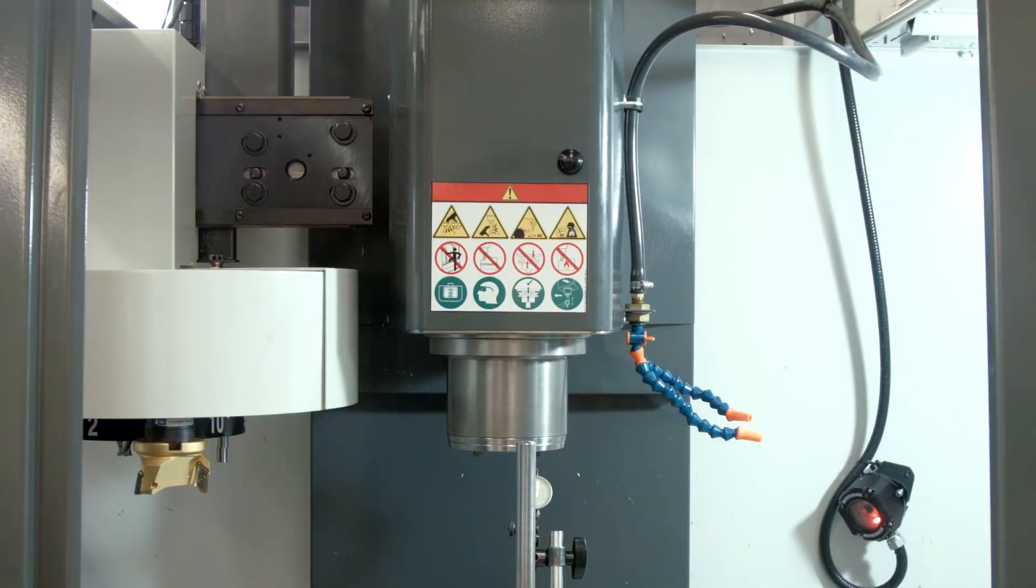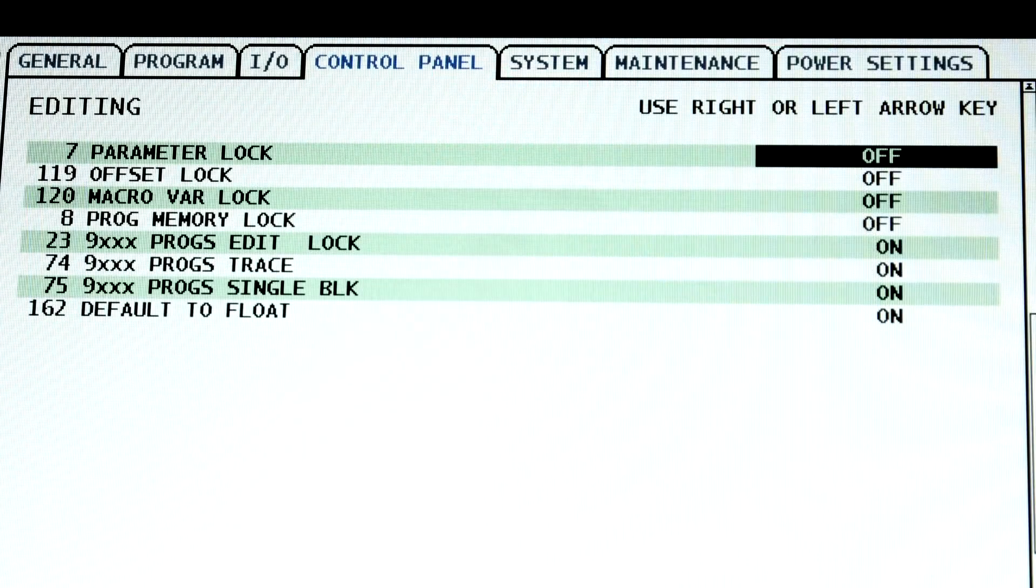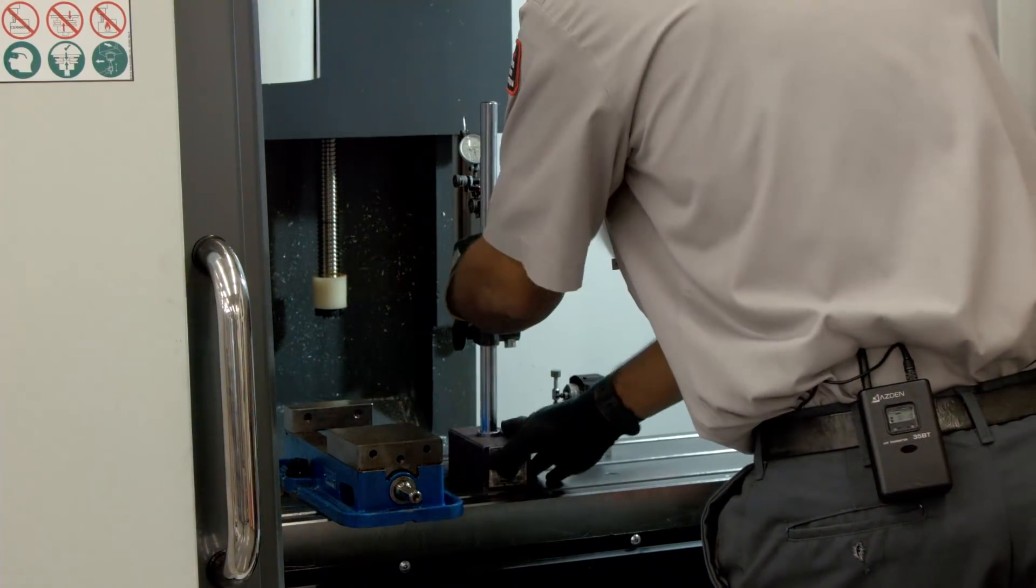Once the number is achieved jog the Z axis up. Set setting 7 back to on. Then remove the indicator and mag base from the machine.